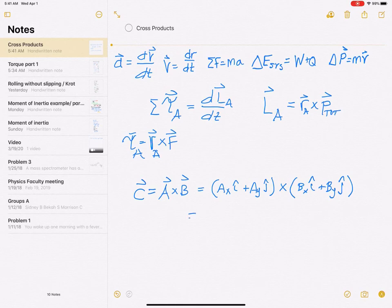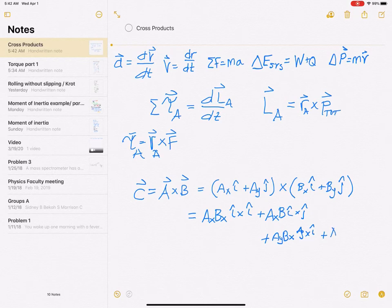We can then use foil and all of this, and I get A X B X I hat crossed into I hat. So, I get A X B Y I hat crossed into J hat. So, then I get A Y B X is J hat cross I hat. And then finally, A Y B Y is going to be J hat cross J hat.